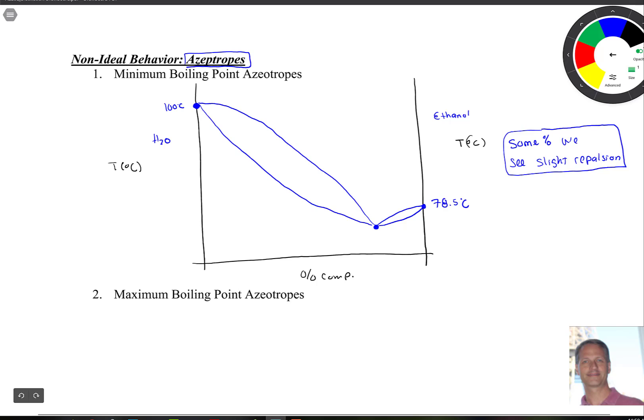Now the way that you look at this is here you have your water, here you have your ethanol. And if we were to start off at say this percentage of ethanol, and we were to distill it using a fractional distillation.